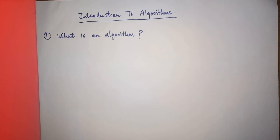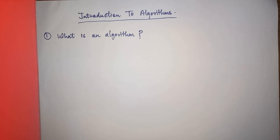Algorithms play an important role in computer science, so we need a good knowledge of them. Informally, an algorithm is just a recipe to solve a particular problem. But when it comes to the formal definition, we can define it as a sequence of computational steps that take in some input and provide some output.